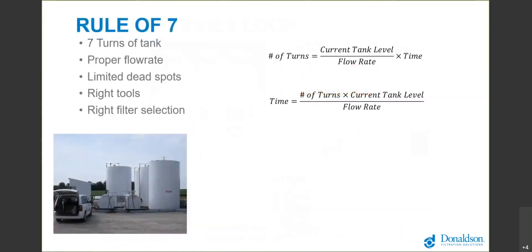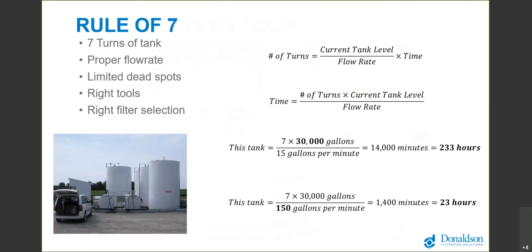Here's a different application where this customer had four 20,000 gallon tanks. If the tanks weren't completely full they had about 30,000 gallons of diesel on site. By the math, that's just not really functional to kidney loop. Even if you increase the flow rate on the pump from 15 gallons a minute to 150 gallons per minute, 23 hours is not achievable.